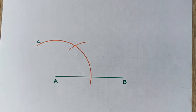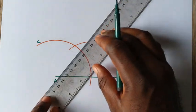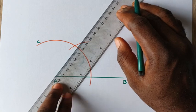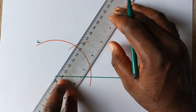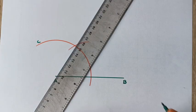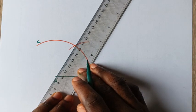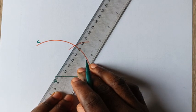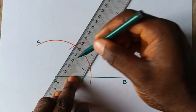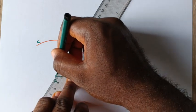Now you need to join where this line intersects to point A, which is your origin. Once you place your meter rule properly, draw a straight line.